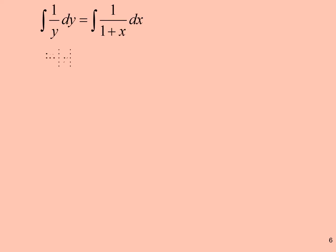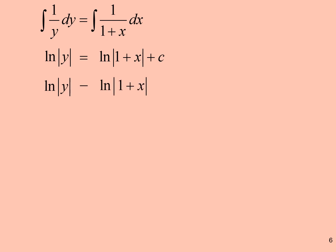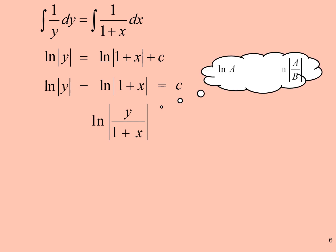From the equation, we get ln Y equal ln(1 + x) plus C. Then ln Y minus ln(1 + x) equals C. We simplify using the formula ln A minus ln B equals ln(A/B), giving us ln(Y / (1 + x)) equals C.